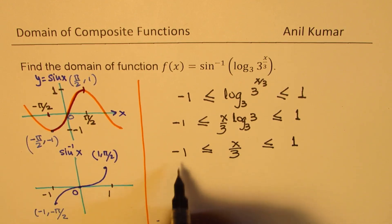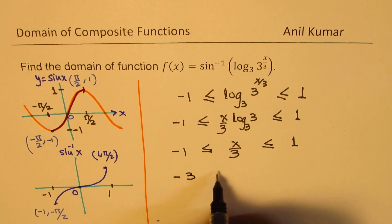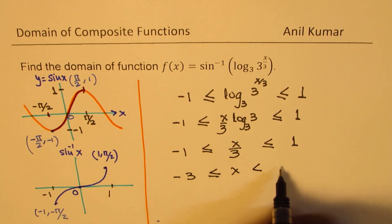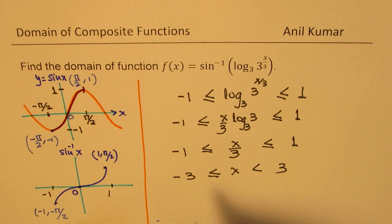Now, we can multiply by 3. We get minus 3, x is greater than equal to and it is less than equal to 3. So that becomes the domain of the function.